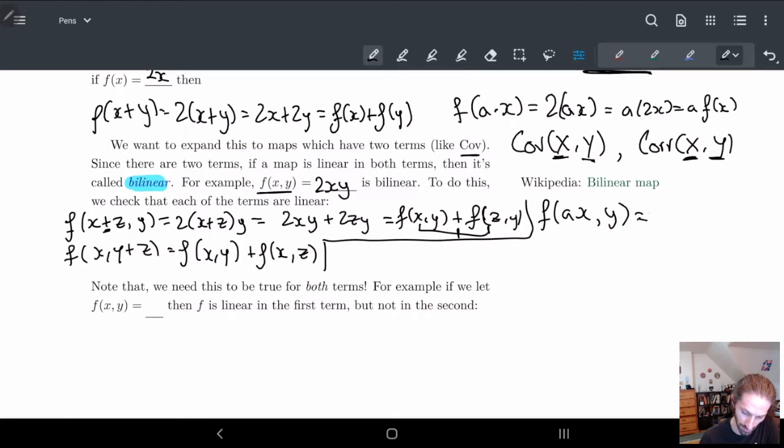And notice here how this gives me 2 times a x times y and here again by commute I can commute things to I can bring the a in front a times 2xy. So I have a times f of x y. And obviously in a similar manner a x a y I can bring this a in front too. So you can see this is where bilinearity comes from. It doesn't matter which of the terms I look into I can split in the normal way.